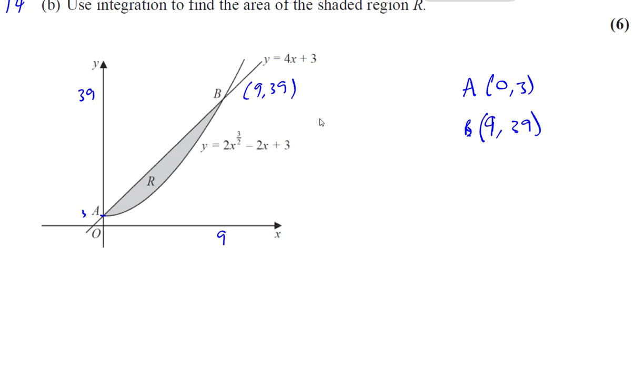So we can just take the area of the line and subtract from it the area of the curve because the line is above the curve. And that will give us a positive area. And we do that and we'll end up with the area of R.